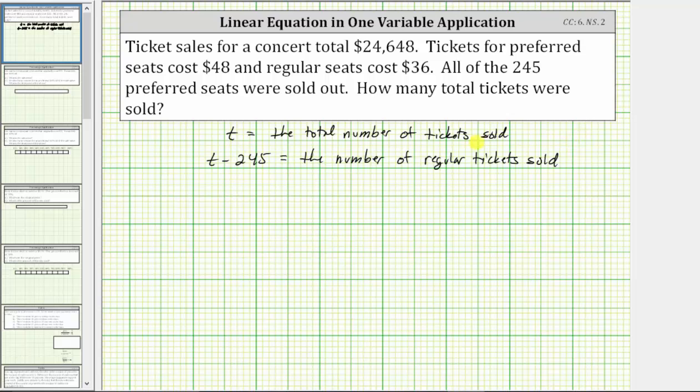And now we need to write an equation that we can solve for t. And we can do this because we know the total value of all the tickets sold is equal to $24,648. And each preferred ticket is worth $48, and 245 were sold. And each regular ticket is worth $36, and the number of regular tickets sold is equal to the expression t minus 245.